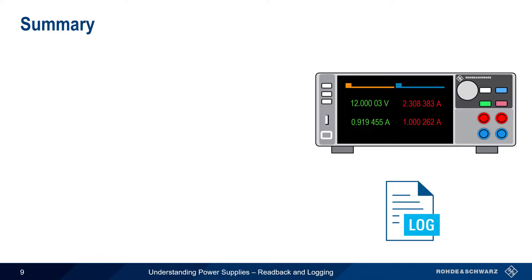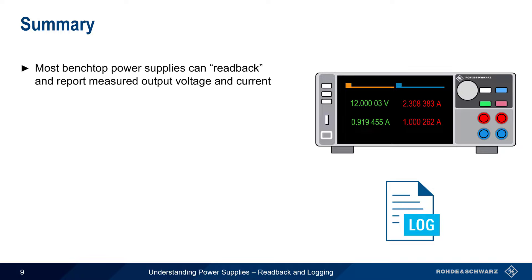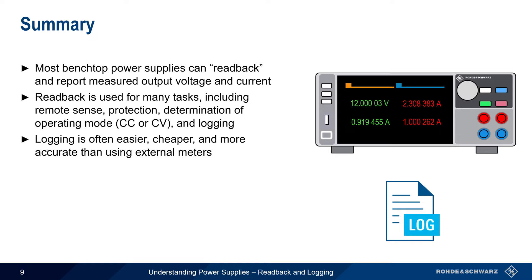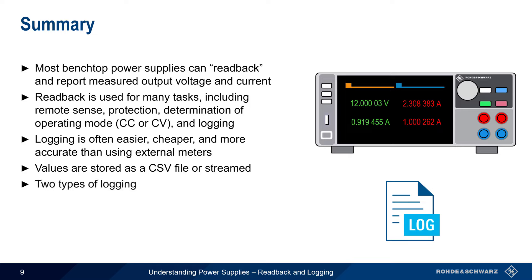Let's end with a brief summary. Most benchtop power supplies have a readback function that measures and displays the supply's output voltage and current. These readback values are used for many tasks, including remote sense, various protection functions, and determining whether the supply is operating in constant voltage or constant current mode. In this presentation, we focused on logging this readback data. Power supply data logging is often easier and cheaper than using external meters, and it also allows for greater accuracy, particularly when measuring two or more channels simultaneously. Log data is usually stored as plain text comma-separated value files, but in some cases it can be streamed to another device. There are two general categories of logging: standard logging is often limited to rates of about 10 samples per second, but some power supplies support a high-speed or fast logging feature with rates up to a half-million samples per second.